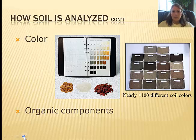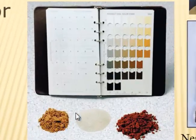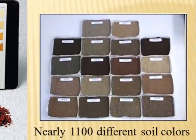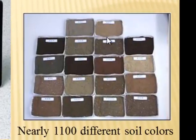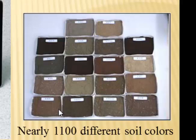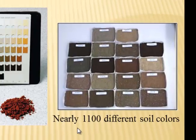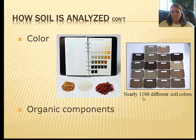Another way to analyze soil is by color. They'll take a portion of the soil and use a special book with small windows — they put the soil behind it and find the color match. There are nearly 1,100 different colors used for soil classification. They can also look at organic components: whether there is a lot of plant life, organisms, etc.